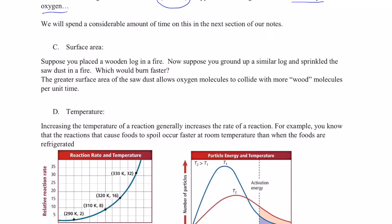Next up is surface area. Suppose you put a wooden log on a bonfire and watched it burn. Now suppose you took that same log, ground it up into sawdust, and sprinkled that sawdust on the fire—which would burn faster? The sawdust would, because we have more area available for collisions to occur. If we just have a log, only its surface can react with oxygen molecules, whereas if we grind it up, more of the log is exposed to oxygen and the rate increases.